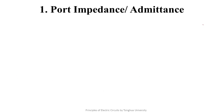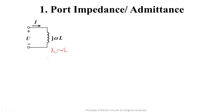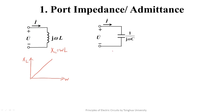In this lecture, we will introduce the frequency characteristics of three situations. The first is the frequency characteristic of port impedance or admittance. For an inductor, the inductive reactance is defined as XL = ωL. We can draw the curve of inductive reactance changing with frequency, where the horizontal axis is ω and the vertical axis is XL. As can be seen from the expression, it is a straight line increasing linearly with increasing frequency.